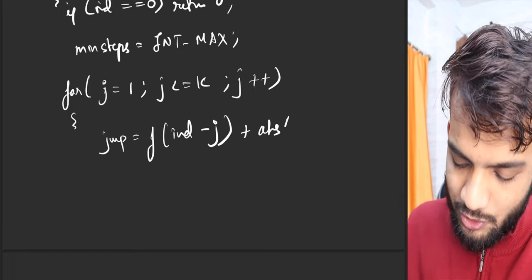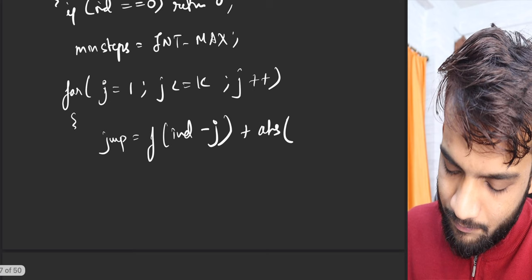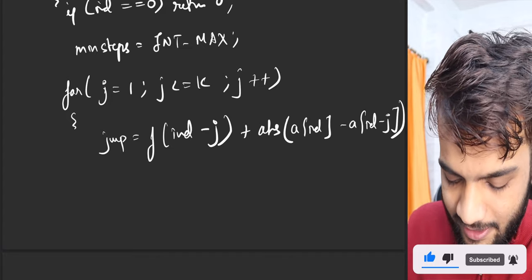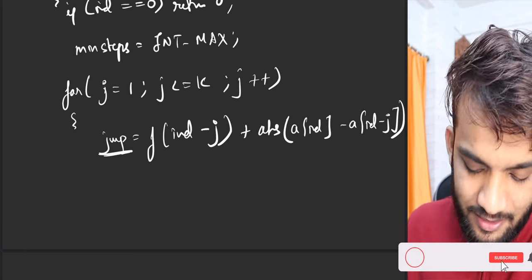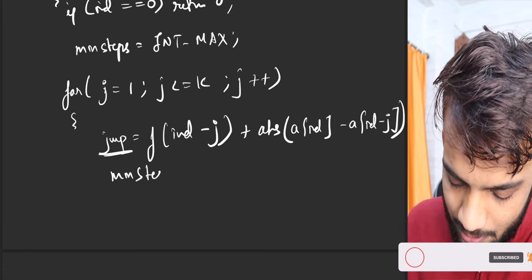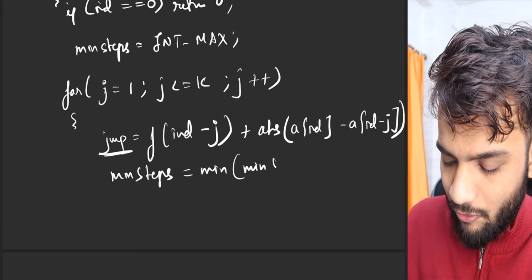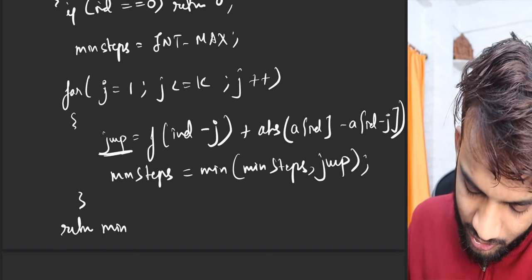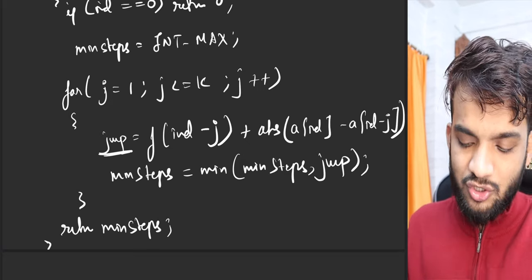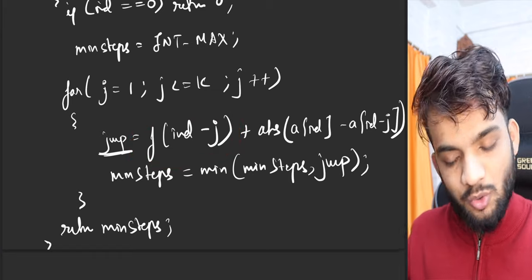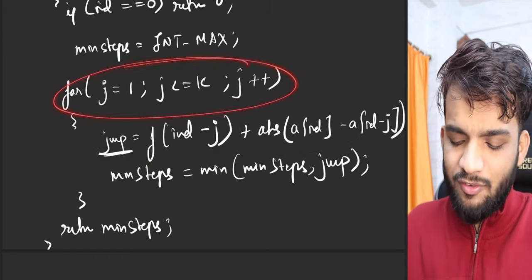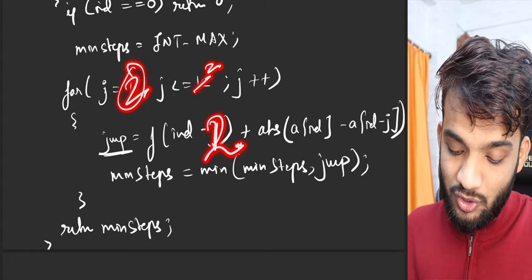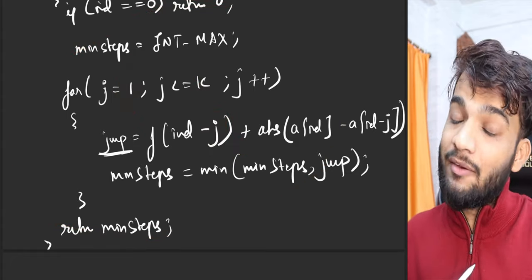The jump energy is |a[index] - a[index-j]|. I store the minimum of all jumps in minSteps, and at the end return minSteps. So instead of writing index-1, index-2 separately, I changed it into a for loop. Even if k is 2, it becomes index-1 then index-2, and both minimums are taken. The code change is straightforward.